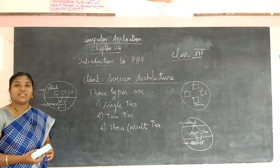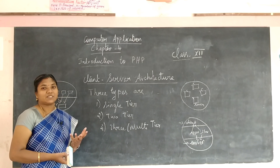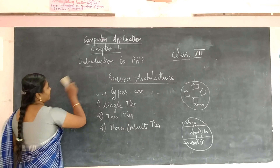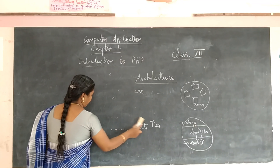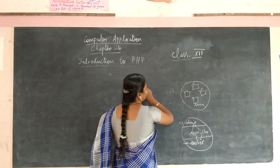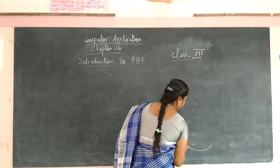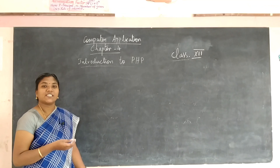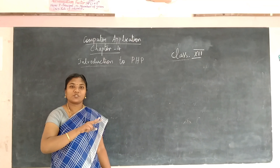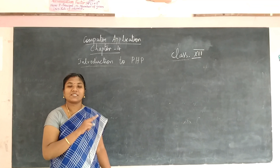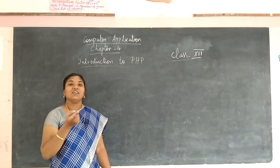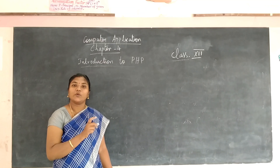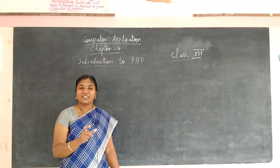Next we are going to see how website programming is created. There are two types of website programming languages: client-side and server-side. PHP is a purely server-side scripting language, while JavaScript is the client-side programming language.